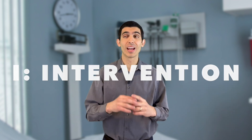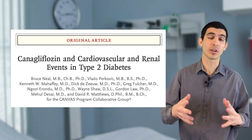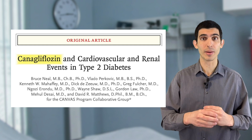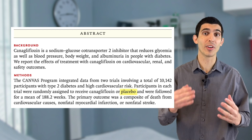Next is the letter I — I stands for intervention, or E for exposure if you're not talking about an intervention. In the Canvas study, the intervention was canagliflozin, a specific type of SGLT2 inhibitor. Just as straightforward is the letter C — C stands for control. The control group can be placebo, another drug, or simply the absence of the intervention. In the Canvas study, the control group was placebo.